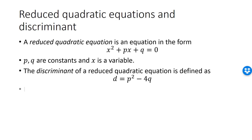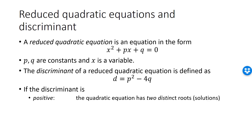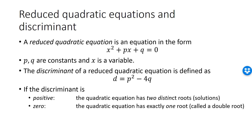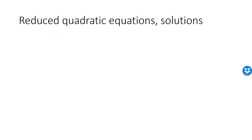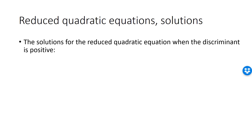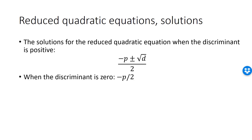The sign of d determines how many solutions the reduced quadratic equation has. If d is greater than 0, the equation will have two solutions. If d is equal to 0, it will have one solution. If d is strictly negative, it will have no solution among the real numbers. When d is greater than 0, the solutions are minus p plus or minus the square root of d, divided by 2. When d is 0, the single solution is given by minus p over 2.